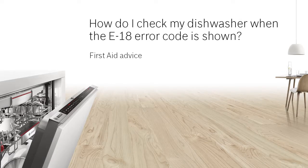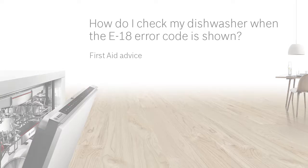How do I check my dishwasher when the E18 error code is shown? When the E18 error code is shown on your dishwasher's display, please switch off and unplug your appliance. This error code means that the water supply has been cut or it is too low.